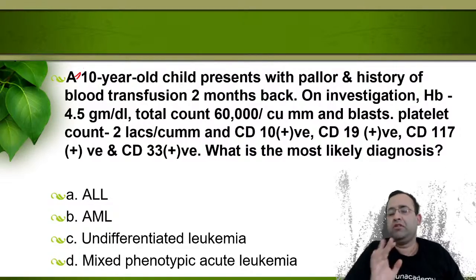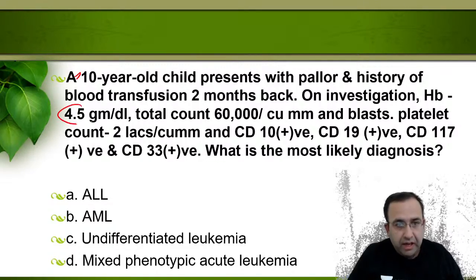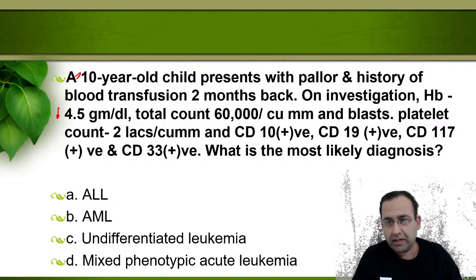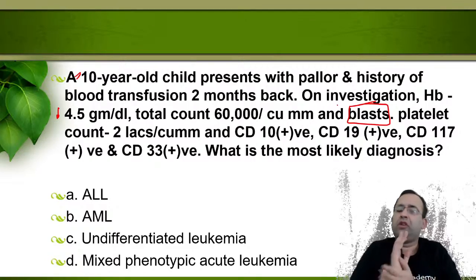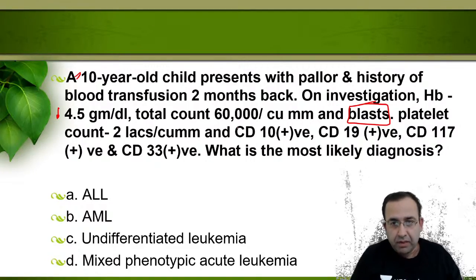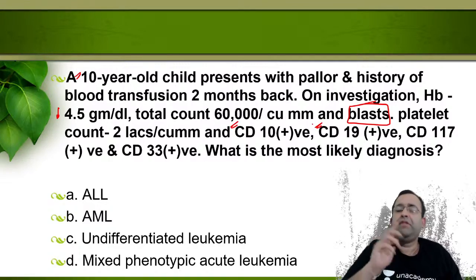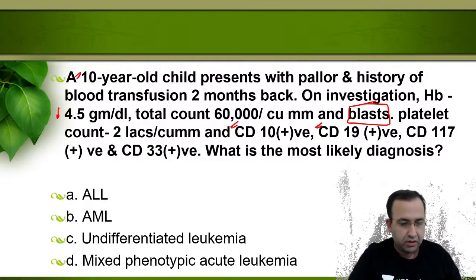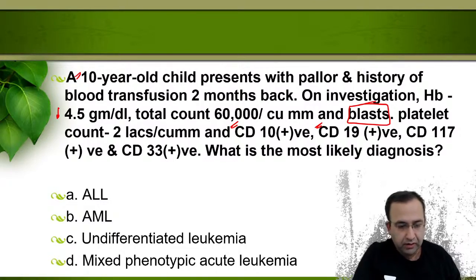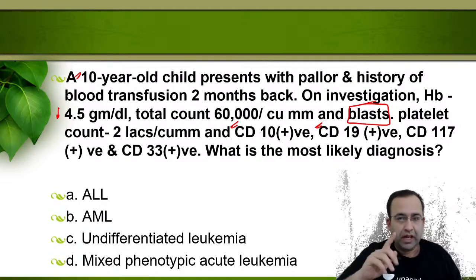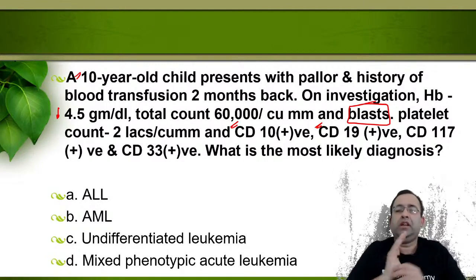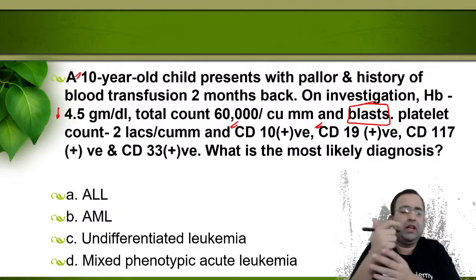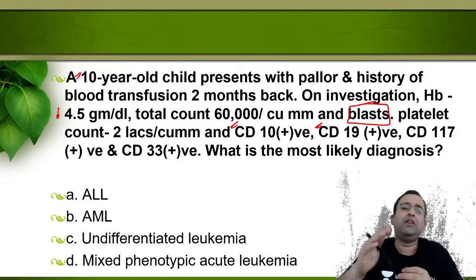A 10-year-old child presents with pallor and history of blood transfusion two months back. The child has very low hemoglobin, high TLC, with presence of blasts — making it a case of acute leukemia. These blasts are CD10, CD19, CD117, and CD33 positive. What is the most likely diagnosis? This is a question where students always have confusion and tend to misinterpret.